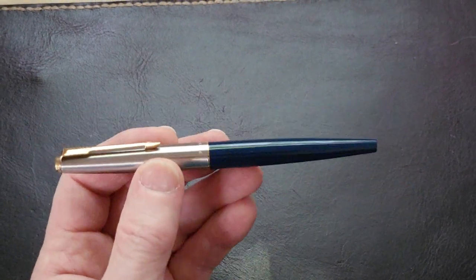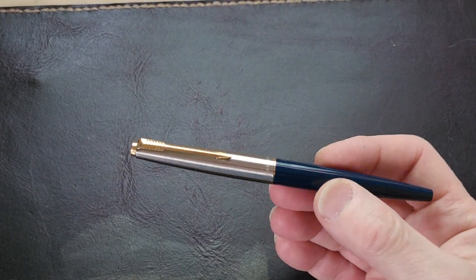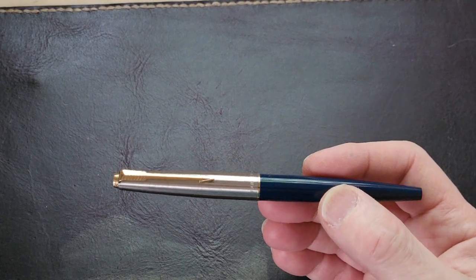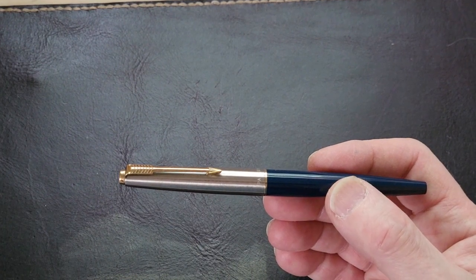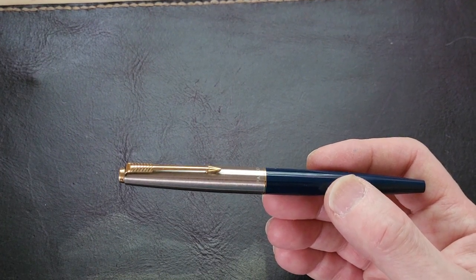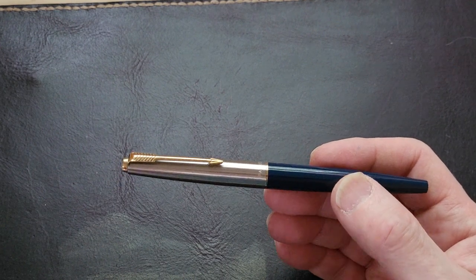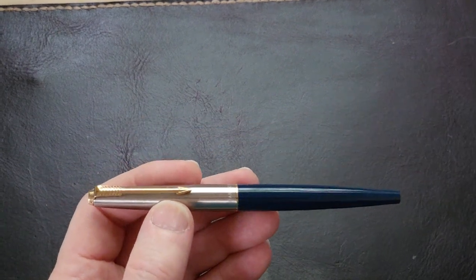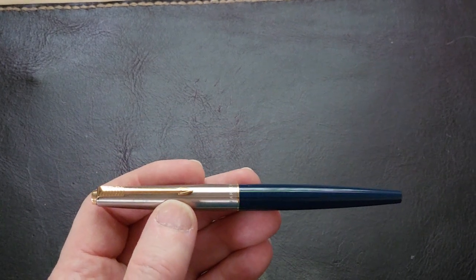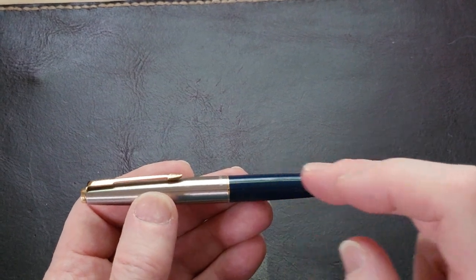He based it on another pen, the Eversharp 10,000. Eversharp was another pen company that had been bought by Parker in 1957, so they owned the rights to the pen. They took that as a jumping off point and came up with this design. This is the classic version, and you can tell by the metal cap and the plastic body.